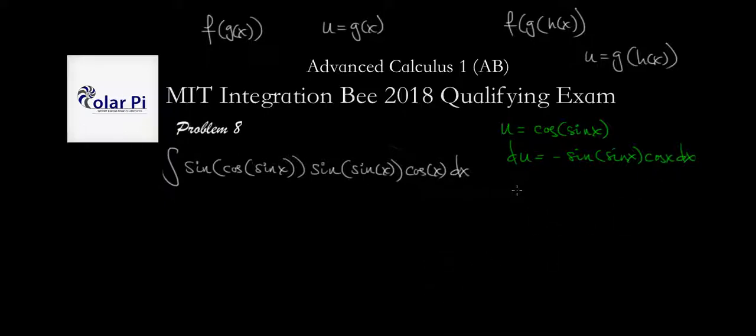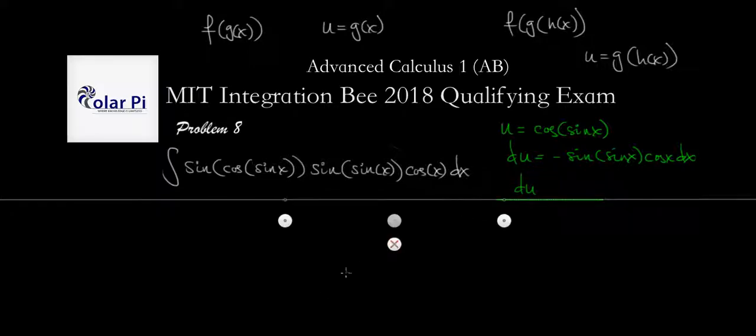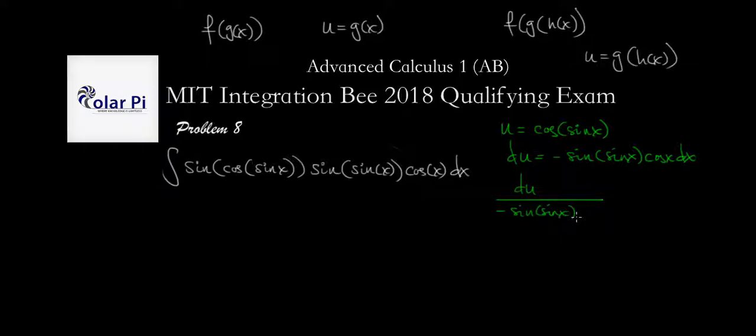Cool, cool, cool. And then if we solve for dx, we get du divided by, du divided by, and then it's going to be negative sine of x times cos x. And this is going to equal dx. Okay, cool.